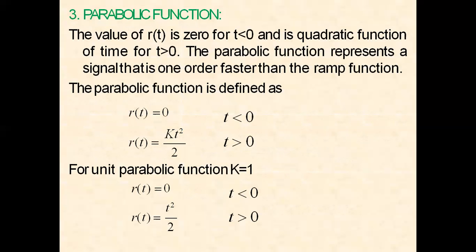Parabolic function. The value of r(t) is zero for t less than zero, and it is a quadratic function of time for t greater than zero. The parabolic function represents a signal that is one order faster than the ramp function. It is defined as r(t) equal to zero when t is less than zero, and r(t) equal to kt²/2 when t is greater than zero. For the unit parabolic function, k equals one, so r(t) equals t²/2 when t is greater than zero.